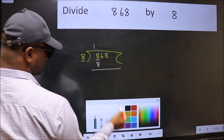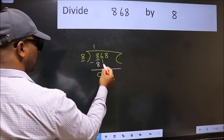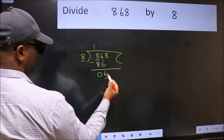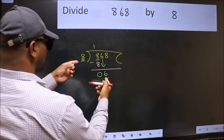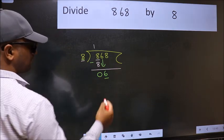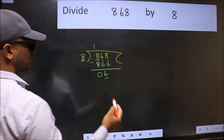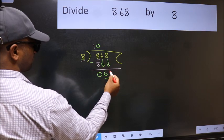Now we should subtract. We get 0. After this, bring down the beside number, so 6 comes down. Now here we have 6 and here 8. 6 is smaller than 8, so we should bring down the second number. The rule to bring down the second number is we should put 0 here, then only we can bring this number down.